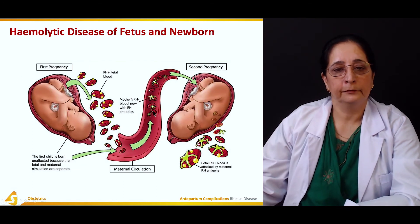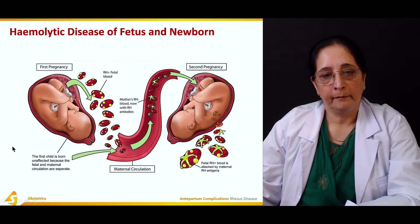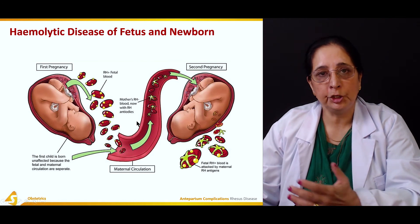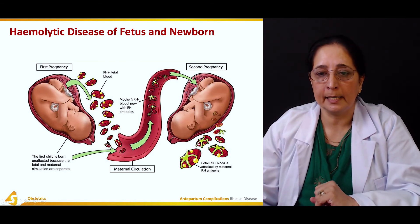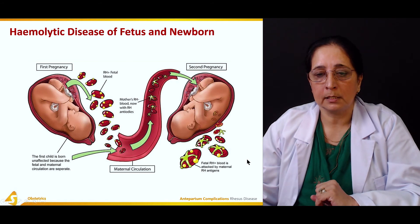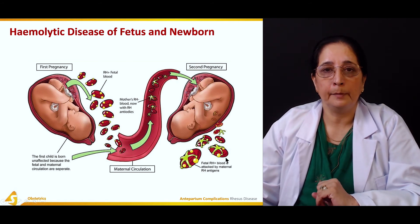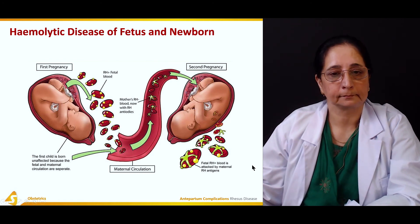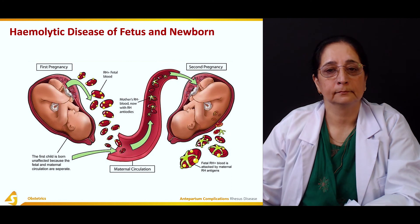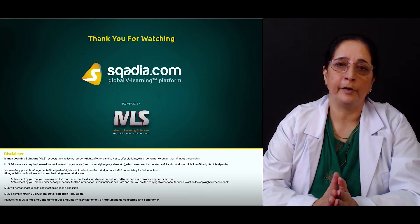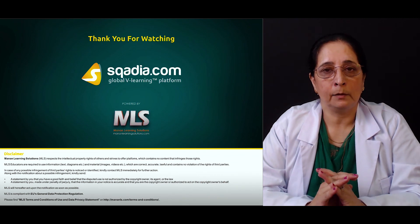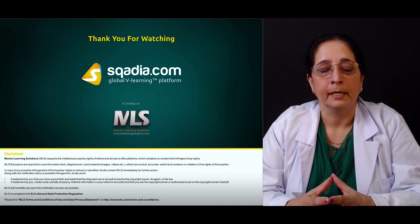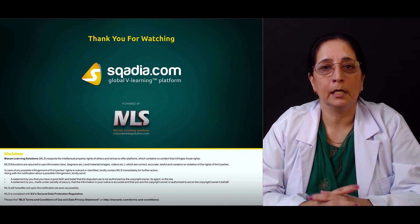In the first pregnancy, red blood cells from the fetus enter the maternal circulation and initiate antibody production. In the next pregnancy, these antibodies cause destruction of the fetal red blood cells. That concludes the detailed explanation of Rhesus disease, how it occurs, and how it affects the baby. Thank you for watching scardia.com.